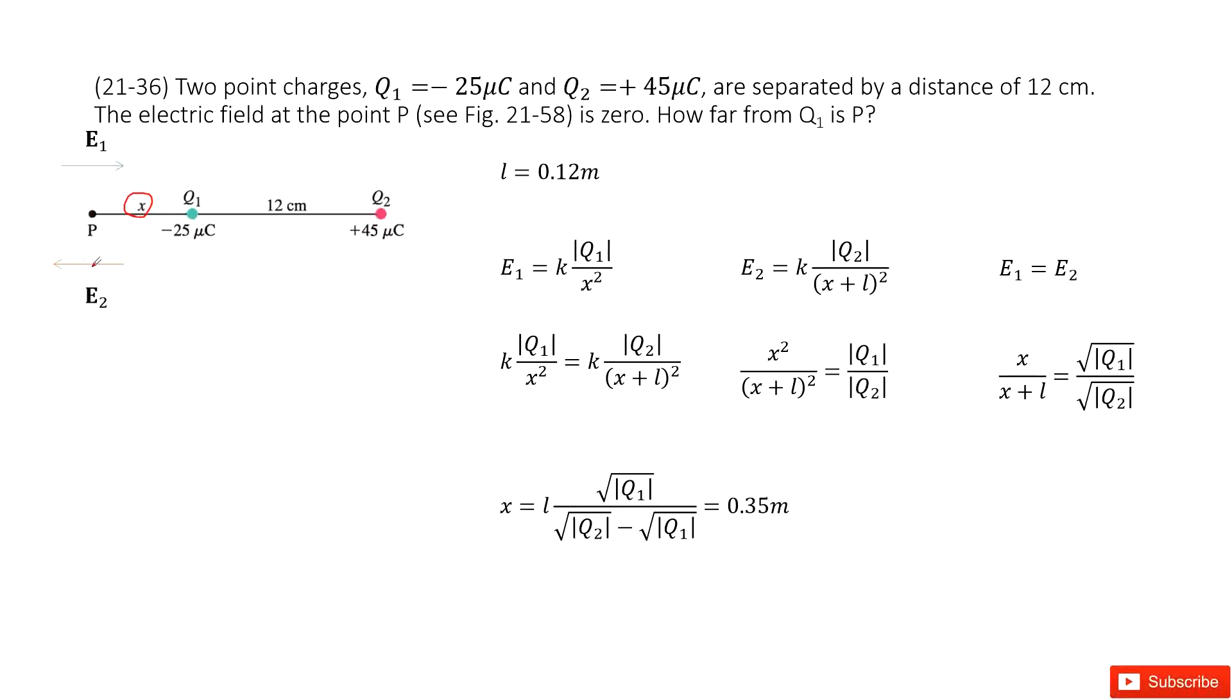If we write down the magnitude for E2, it should be equal to k Q2, and then the distance between P and Q2 is X plus L.